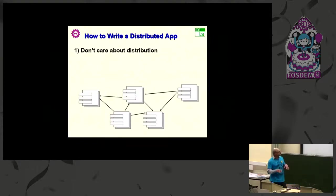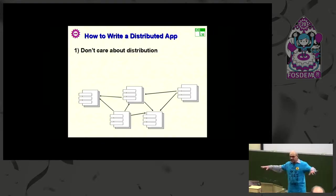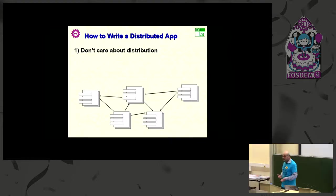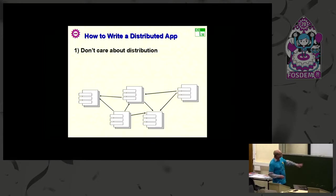So, how would you write, in general, a distributed application? First of all, very important, you don't care about distribution. It's very tempting when you know that you'll have something that will work on several computers, to think first what am I going to put on that computer and that. If you do that, any change will require a total redesign of your application, and it will be extremely costly.